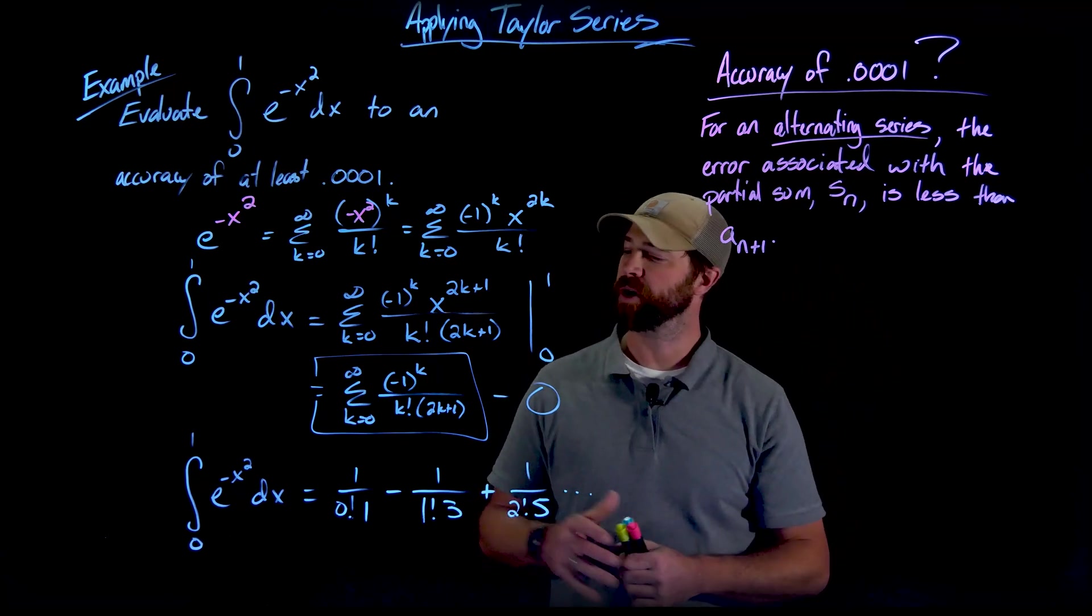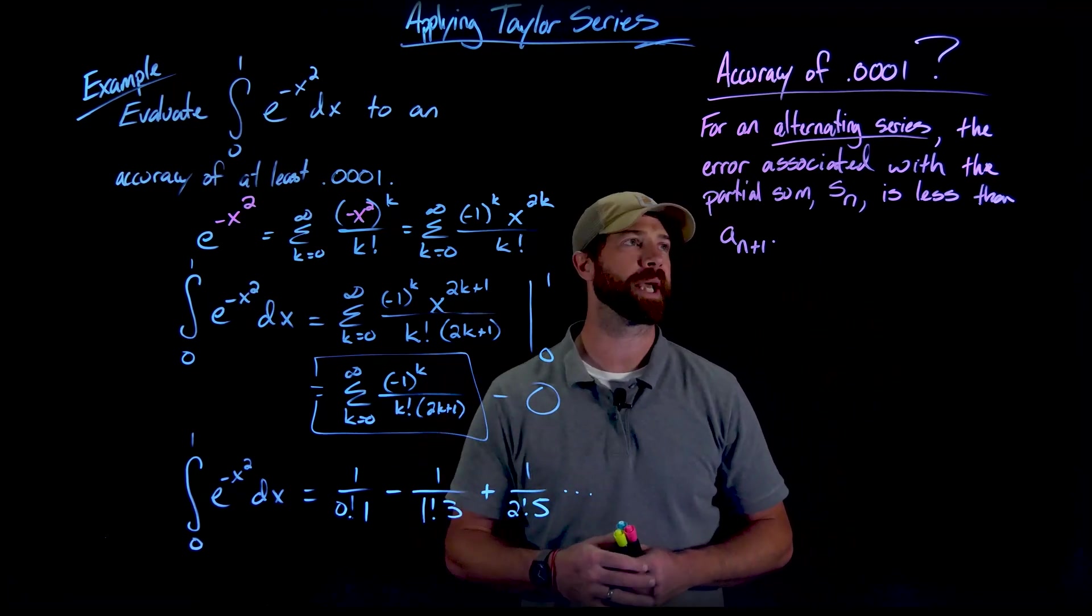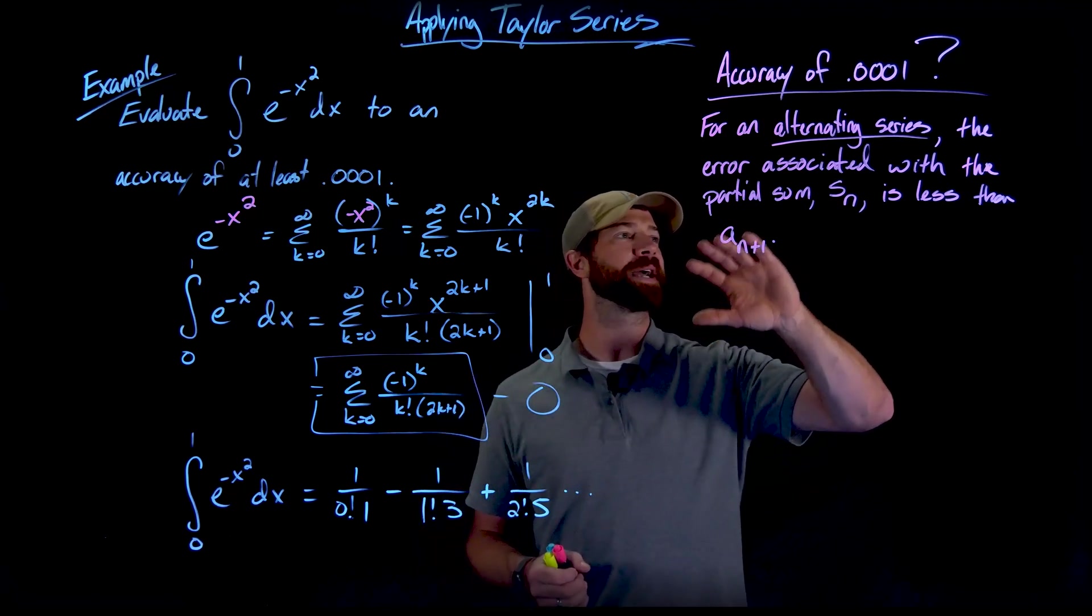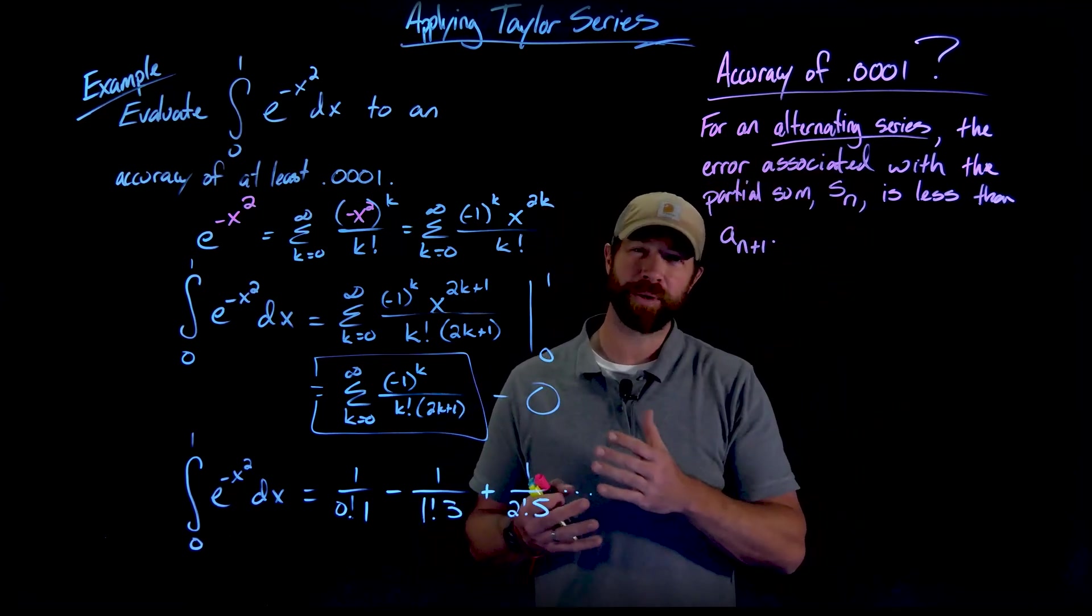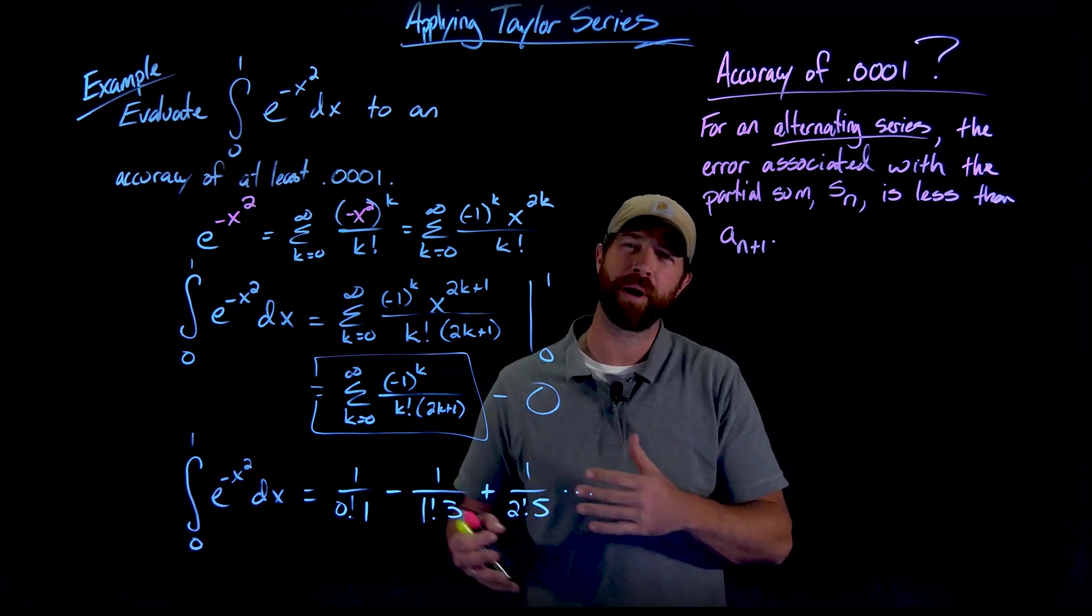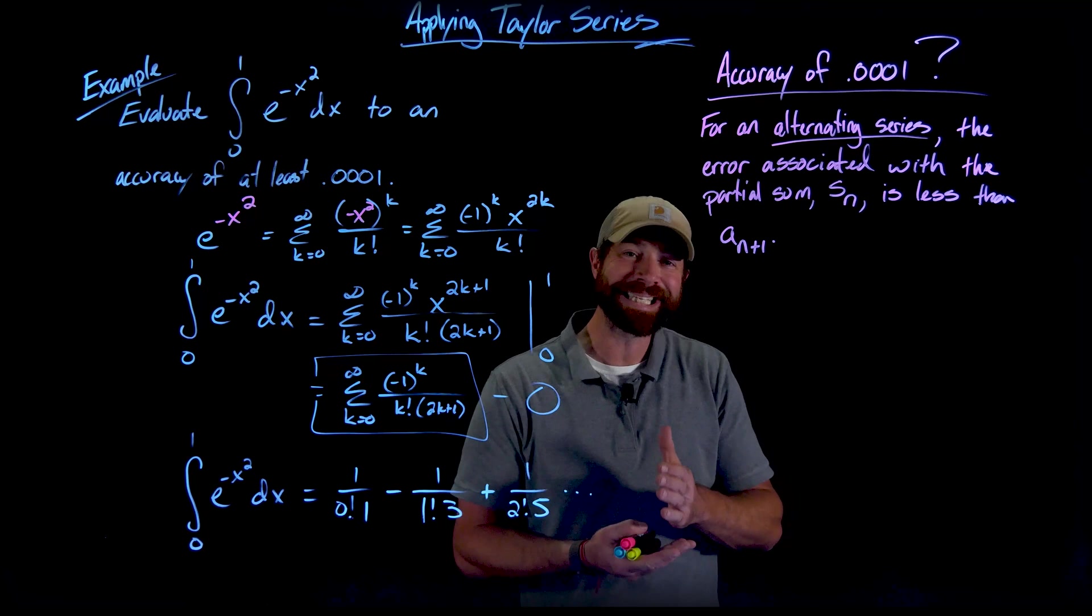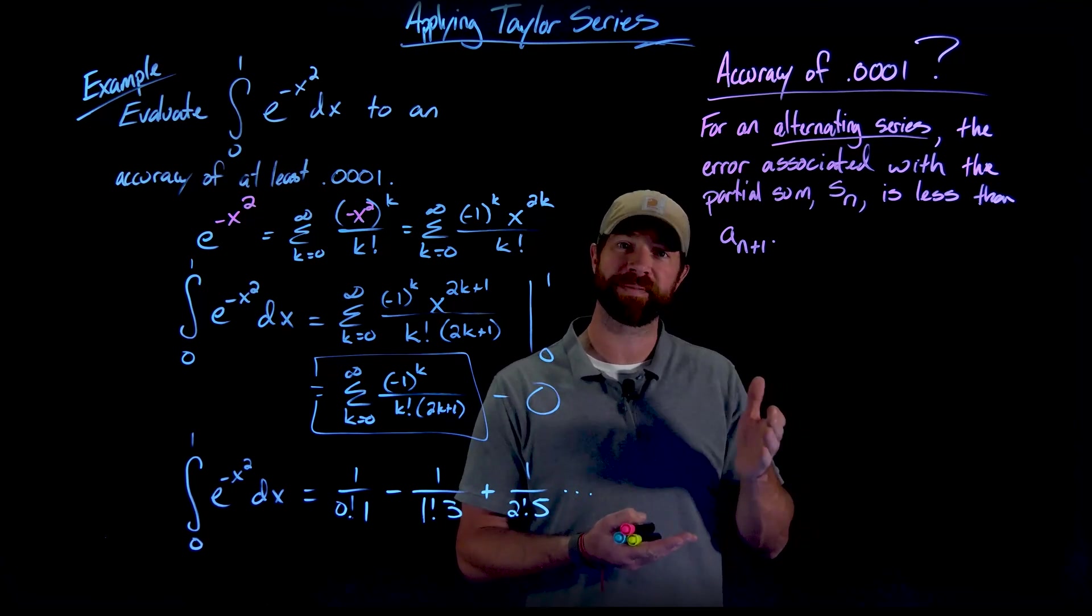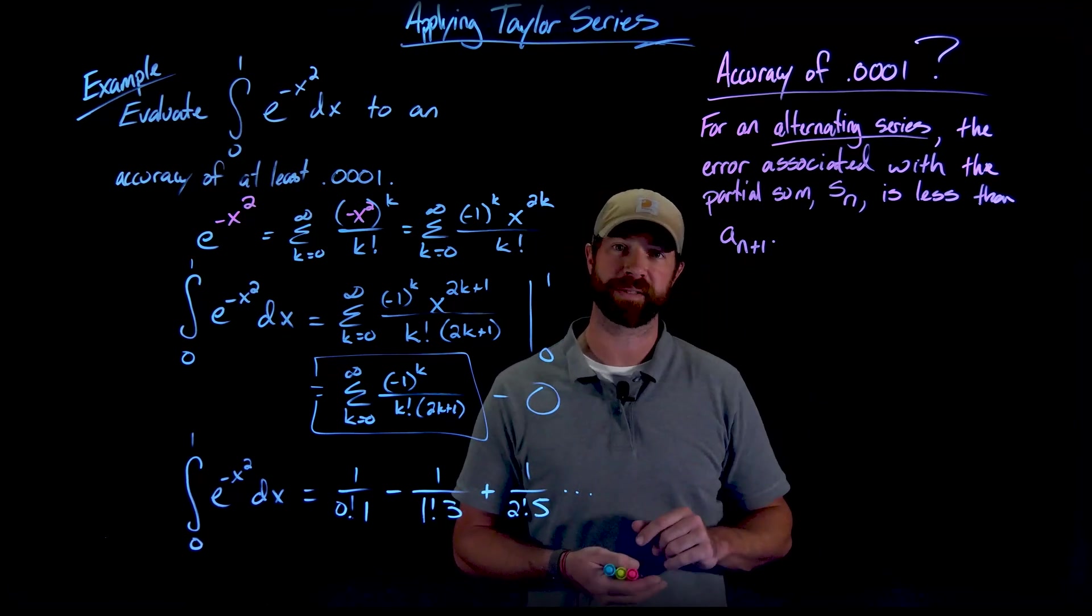But again, I have this alternation right here because it's negative 1 to the k. But again, what I'm saying is if I am thinking of how accurate is at any partial sum. So stopping at any value right there, how do I know how accurate it is? The point is it's at least as accurate as the next value or the absolute value of the next value.